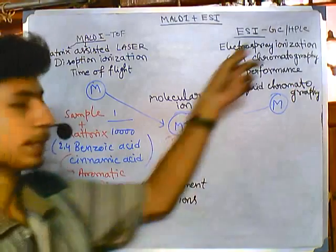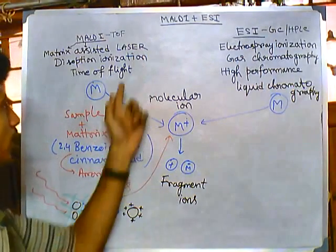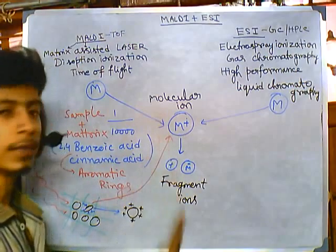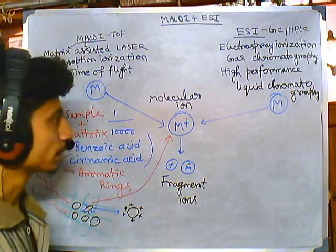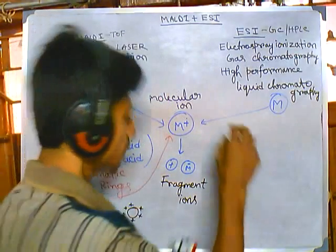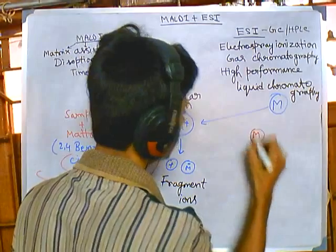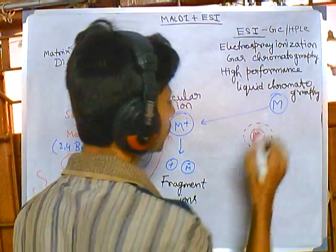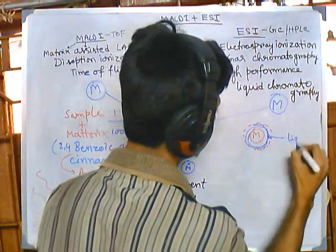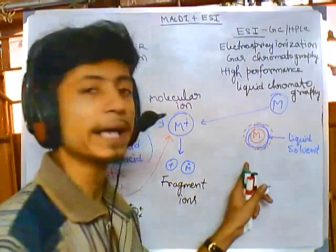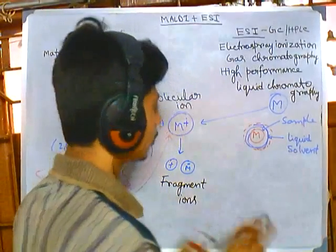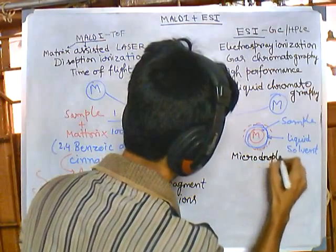Now let's look at the ESI process. This is a somewhat different process. We can utilize it with different analyzers — TOF, time of flight, is one type of analyzer and detector we can use. In case of ESI, or Electro Spray Ionization, the process is different. Here we also have the sample, but the sample is coated with a liquid solvent — not a matrix. We produce a micro droplet, and inside the micro droplet we have our sample.